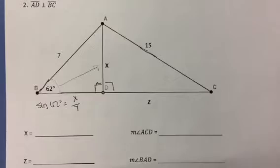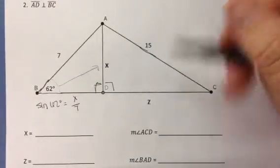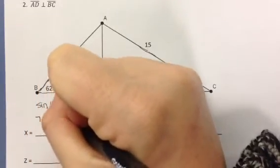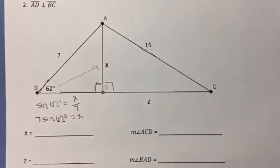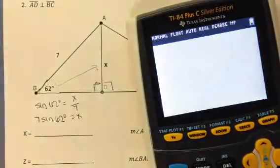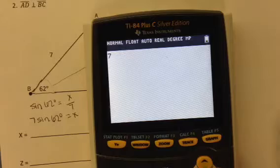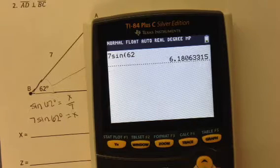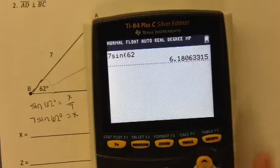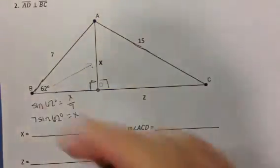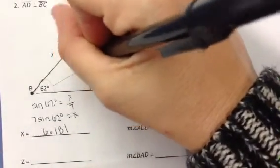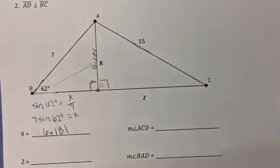If we want to get this in a form we can plug in the calculator, we would have to multiply both sides by 7, and rewrite this 7 times the sine of 62 degrees, and that's going to give us x. Make sure you're in degrees in your calculator. Then you just type in 7 sine 62, and we get approximately 6.181. So 6.181 for the length of x. I'm going to label that on there, too.